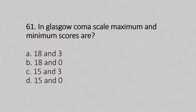Question 61: In the Glasgow Coma Scale, the maximum and minimum scores are — option A: 18 to 3, option B: 18 to 0, option C: 15 to 3, option D: 15 to 0. The answer is option C: 15 to 3.